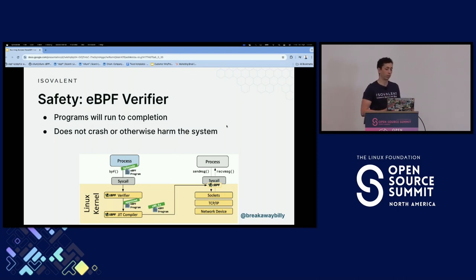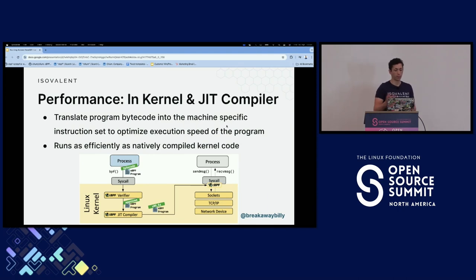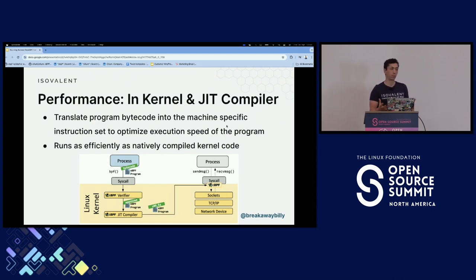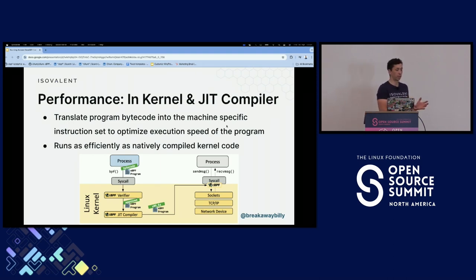This is really one of the core components of eBPF. Once a program passes through the verifier, we want to make sure we get performance benefits out of it. eBPF gets a lot of performance benefits by being code actually running in the kernel and being JIT compiled — taking your program bytecode into the machine-specific instruction set. It basically runs as fast as natively compiled kernel code. So eBPF is both safe and extremely performant.